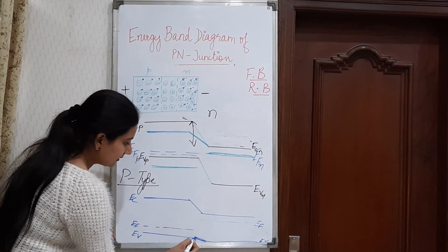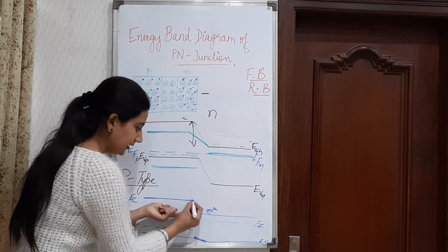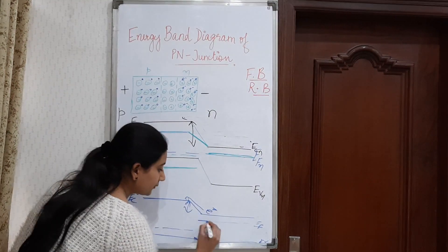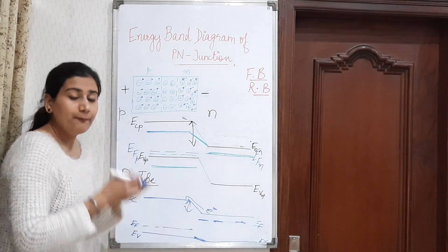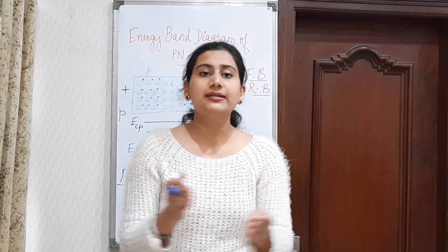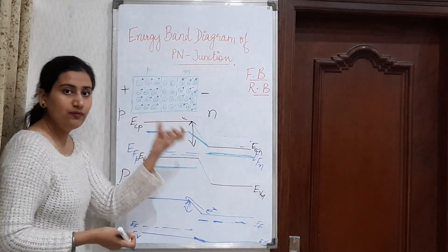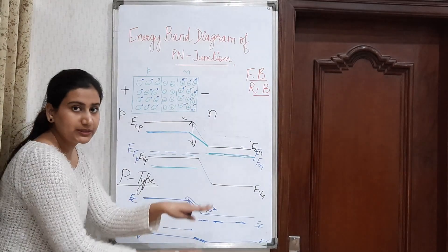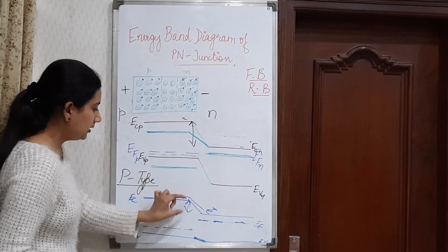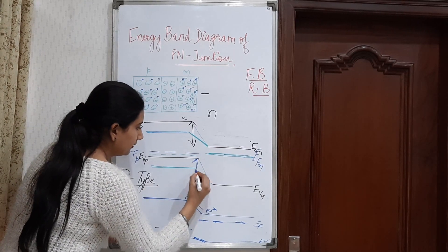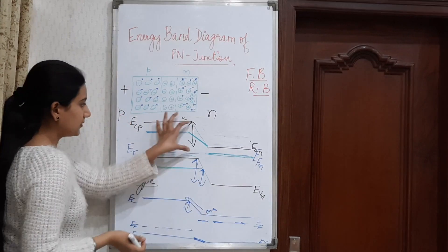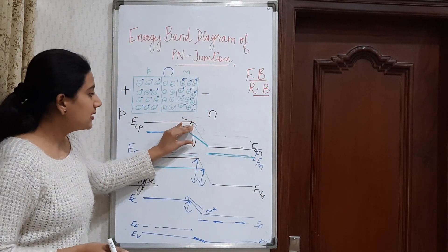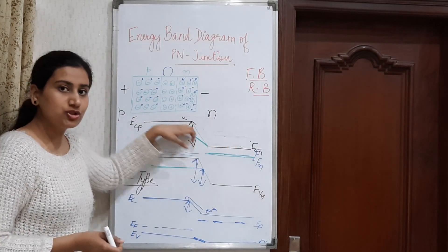There is still some gap — electrons still need energy — but the gap is lowered by forward biasing. The Fermi levels of N and P are now at different levels because when forward biased, there is no equilibrium — there is movement of charges from N to P-type. The difference in Fermi levels corresponds to the gap between the conduction and valence bands. The barrier voltage is opposed by forward biasing, decreasing the energy gap and helping electrons to move across.